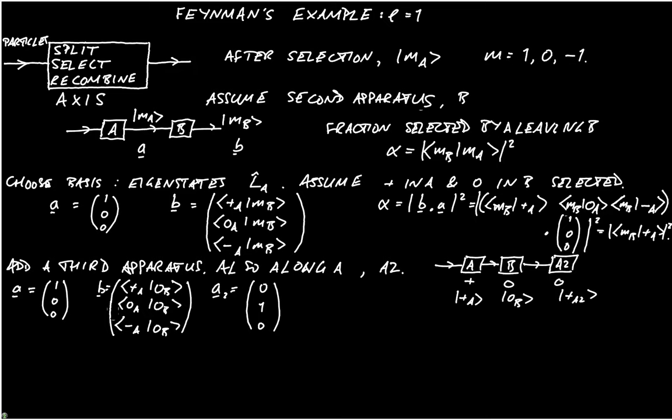The fraction of particles selected by B, leaving A2, is going to be given by beta, which is the square modulus of zero A2, zero B. So this time we have the zero B as the ket, because that's what's left, the apparatus B, and zero A2 is what we're applying.